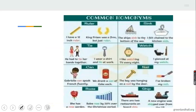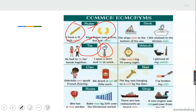Look at this one: 'ruler.' You can see this object — we use it when writing to rule lines. Then 'ruler' is also someone who rules a group of people. So 'ruler' is a homonym — it means different things. Look at the next one: 'tie.' Of course men and boys use a tie to wear. Then 'tie' also means to bind something together, like to tie cords together.